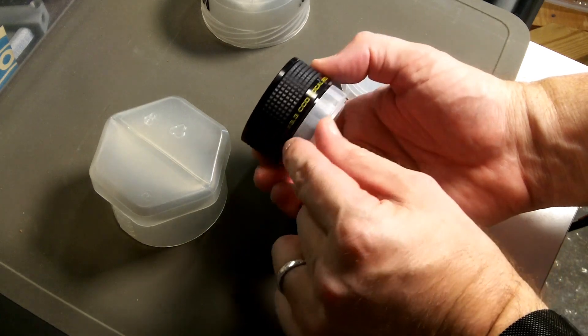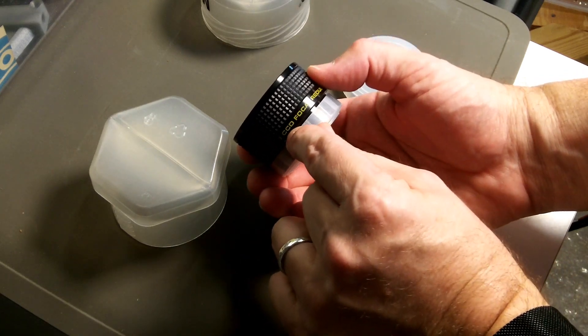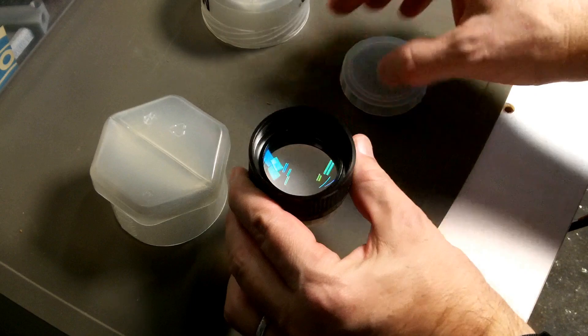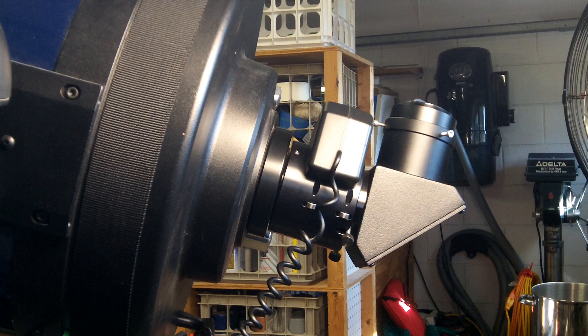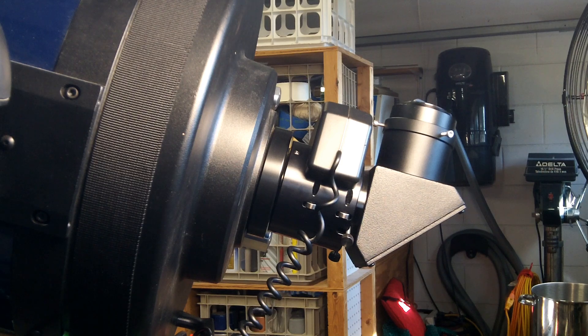This was designed a long time ago for Meade when they had a CCD camera accessory to make enough light come in for that CCD camera. So it can be used with any telescope that has SCT threads on the end.